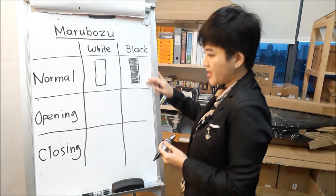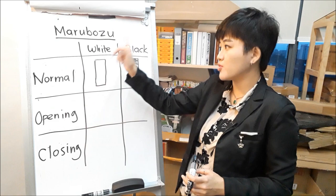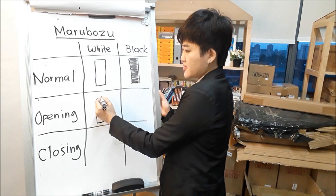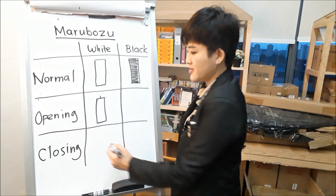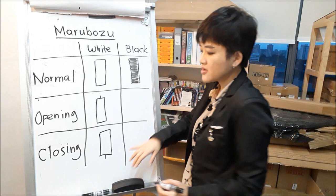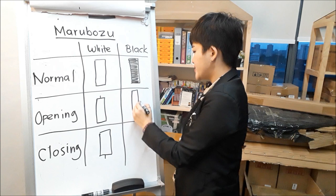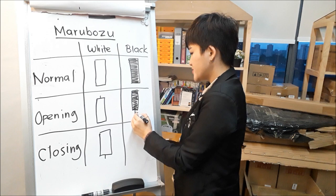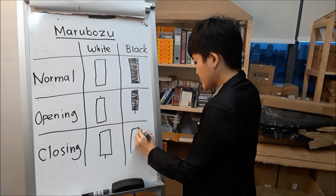Then you have the opening white Marubozu — a long white body with a small upper shadow. The closing white Marubozu is the opposite — a long white body with a small lower shadow. The opening black Marubozu has a long black body with a small lower shadow. And the closing black Marubozu is the other way around — a long black body with a small upper shadow.